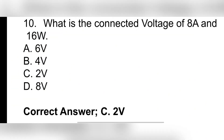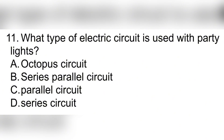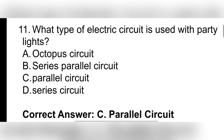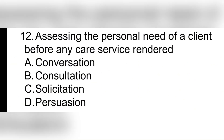Question 11. What type of electric circuit is used with party lights? A. Octopus circuit. B. Series parallel circuit. C. Parallel circuit. D. Series circuit. Correct answer: C. Parallel circuit.